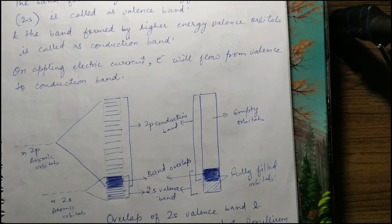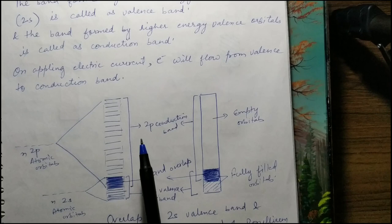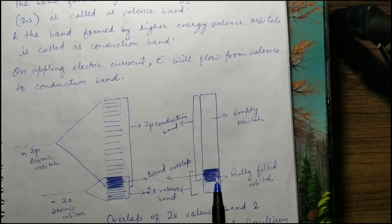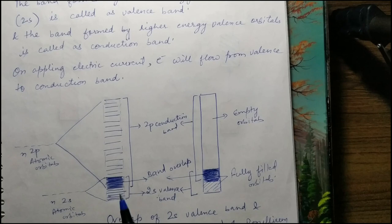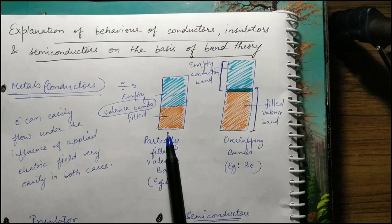In beryllium's case, the 2s orbital is completely filled, so conduction was not expected — but actually beryllium is a better conductor than lithium. This is because the 2s valence band (fully filled) and the 2p conduction band (empty) overlap with each other, allowing electrons to get excited and conduct. So in metals, either the band is partially filled (like Li) or there is band overlap (like Be).